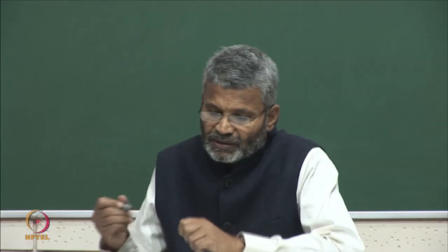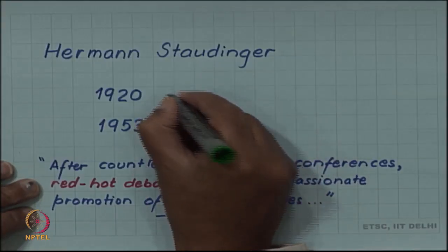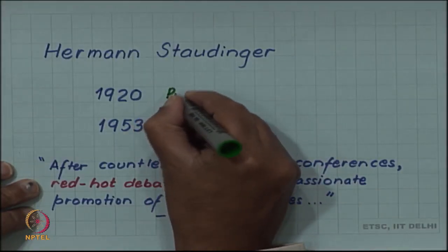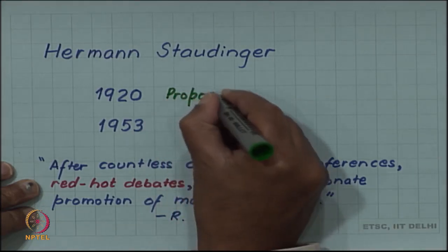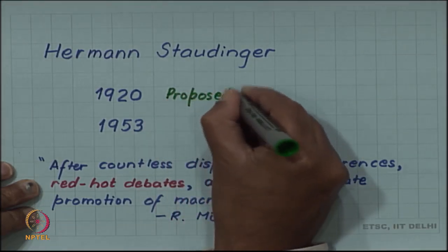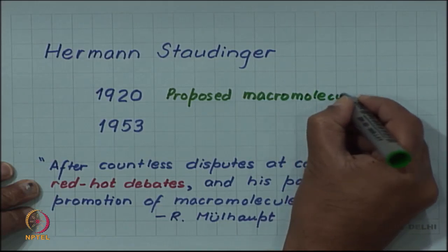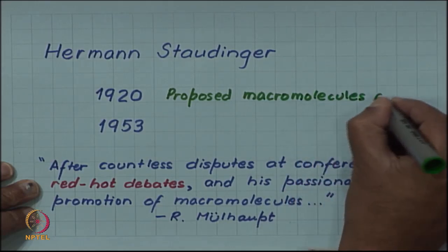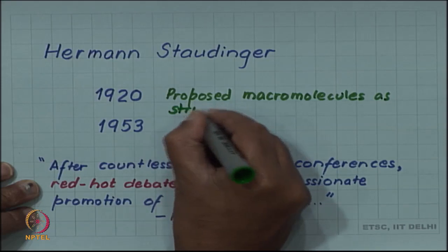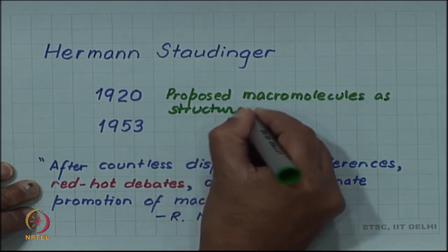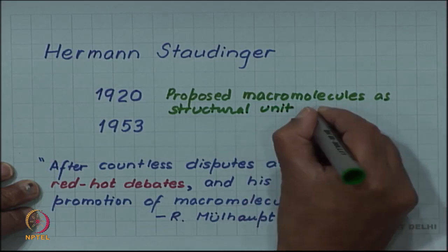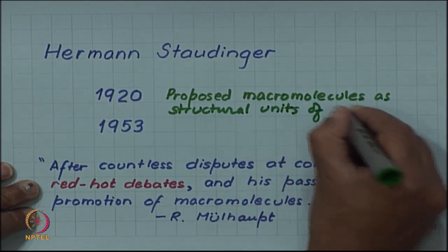The macromolecules concept was originally proposed by Hermann Staudinger in about 1920. He proposed macromolecules as a structural unit of polymers.